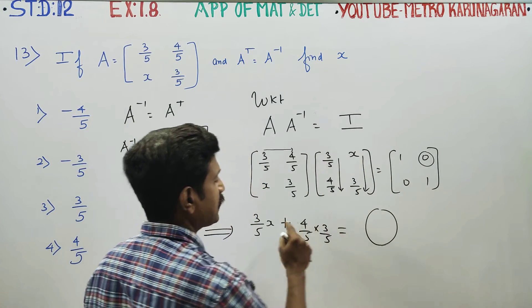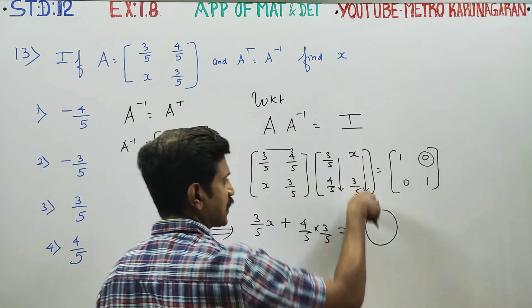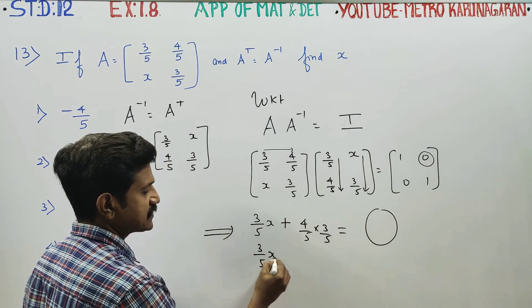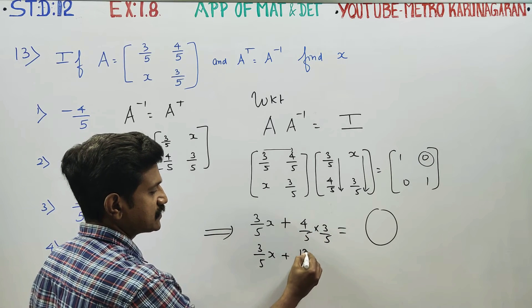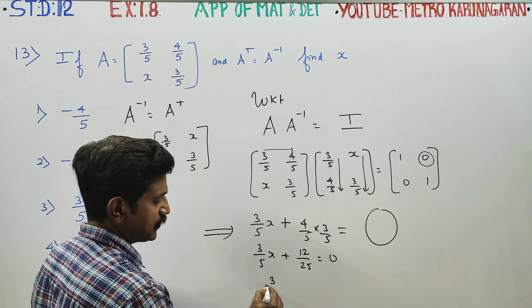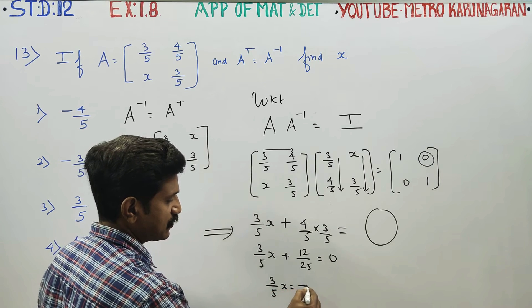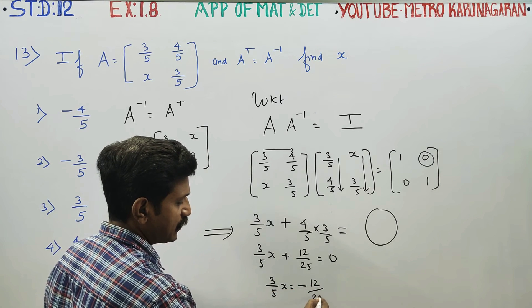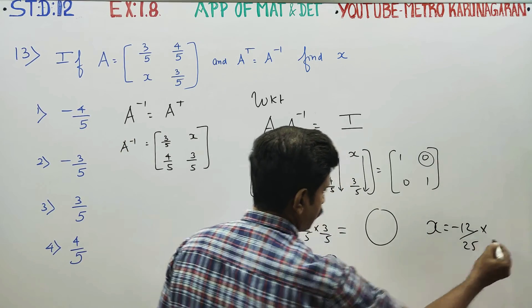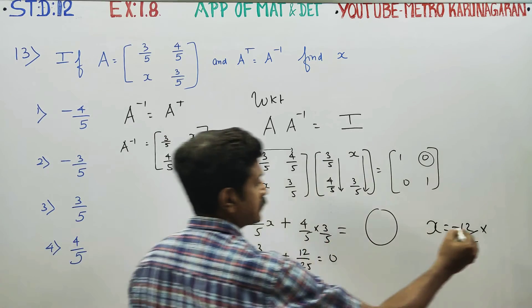X is equal to minus 12 by 25. X is equal to minus 12 by 25 into 5 by 3.